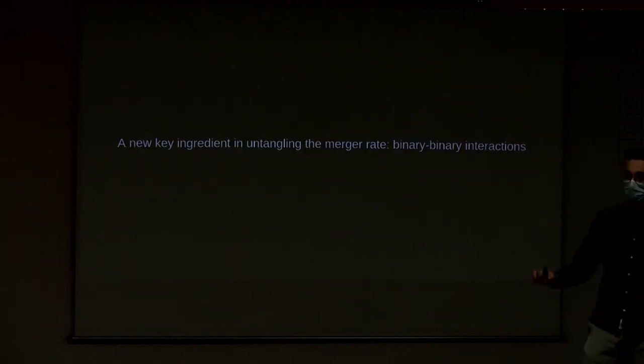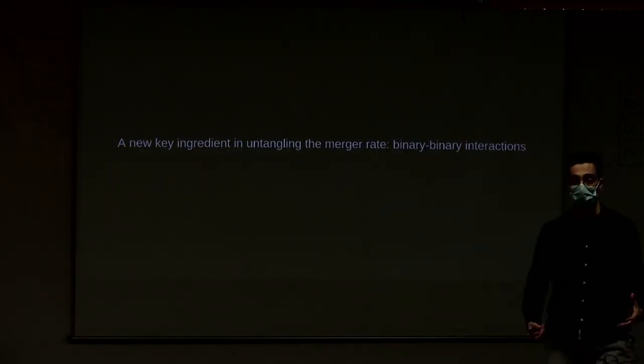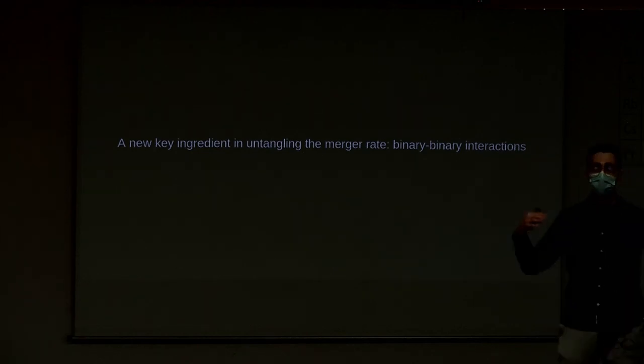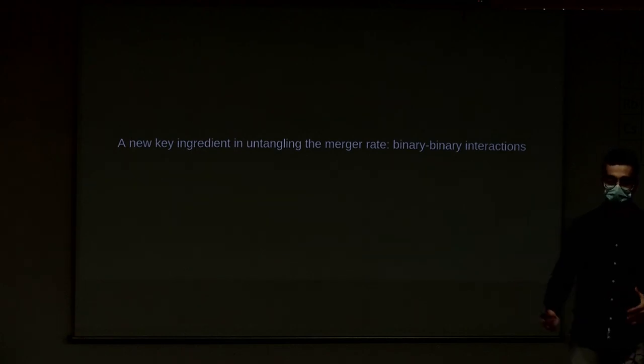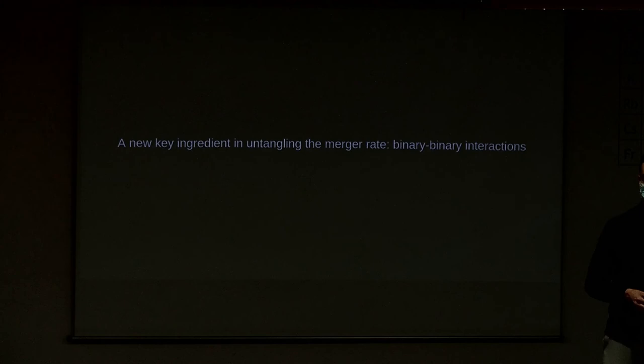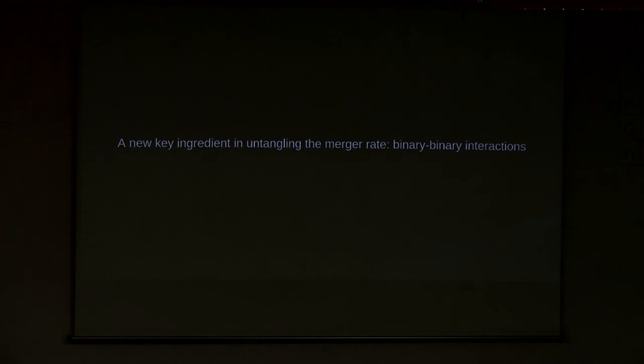To recap, my work or our proposal is that we need a new key ingredient to study mergers coming from dynamical interactions. That ingredient is the interaction between two binaries of black holes. Thank you, and if you have any questions, please.